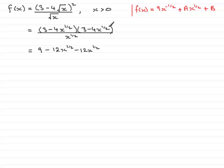And then -4x^(1/2) times -4x^(1/2) is going to be plus 16. And then if you add the powers of x, you've got x to the power 1 or just simply x. So that's the top line. And that's all divided by x to the power half.